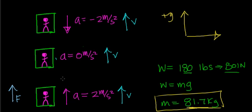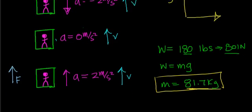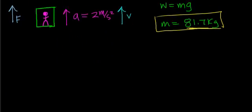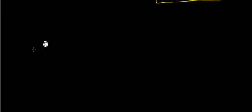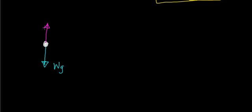Let's take a look at what happens when you're in an elevator moving at constant velocity. The first thing you need to do is draw a free body diagram to represent the forces acting on the person. The force of gravity is pulling this person downward towards the Earth, which is why the weight vector is in the downward direction. There's still a normal force acting on this person due to the elevator floor pushing them up. Off to the side, I'm going to write acceleration equals 0 meters per second squared.